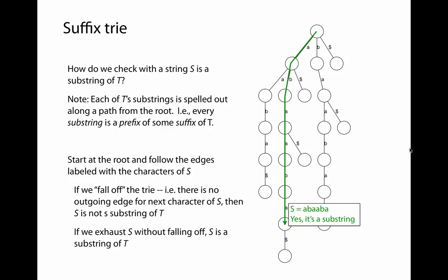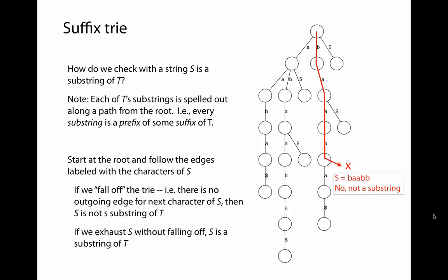For the query string 'abaaba', we follow edges a, b, a, a, b, a — matching all characters without falling off, so it is a substring. For the query string 'baabb', we follow b, a, a, b, but the next character b has no outgoing edge, so we fall off the trie and conclude that 'baabb' is not a substring of T. To check whether S is a suffix of T, we use the same procedure, but additionally check whether the final node has an outgoing edge labeled with dollar sign.